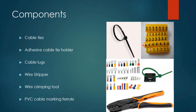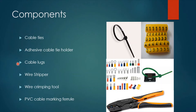What are the needed components to perform the termination and dressing of a distribution board? The first component is the cable tie, which is used inside the distribution board to hold the wires together. The adhesive cable tie holder is also used — it holds the cable ties to provide the required support. Cable lugs are also used for the termination of wires.